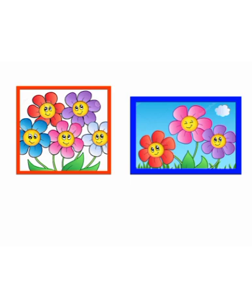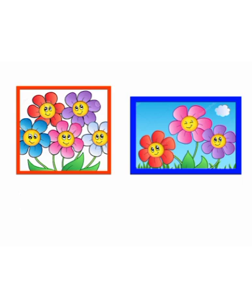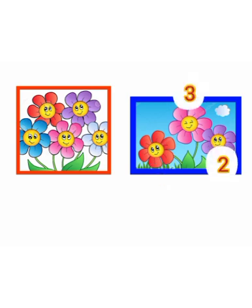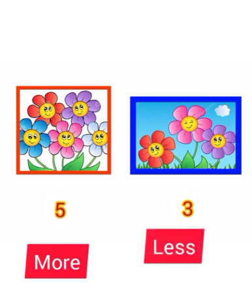Look, here we see two boxes. In the first box we can see some flowers, and in the second box we also see some flowers. Let's count — in the first box: one, two, three, four, five — there are five flowers. In the second box: one, two, three — there are three flowers. We know five is more and three is less.